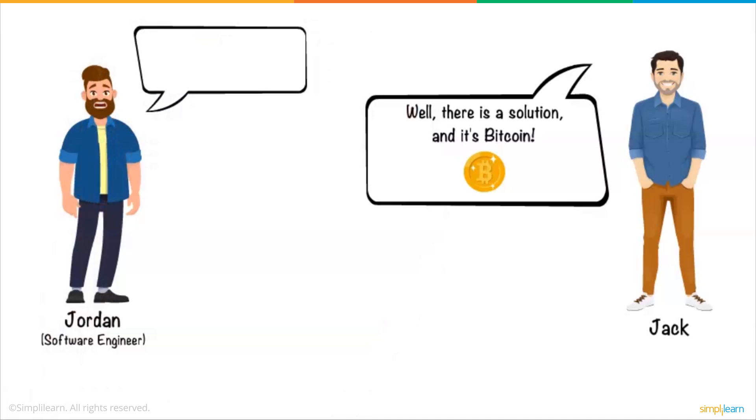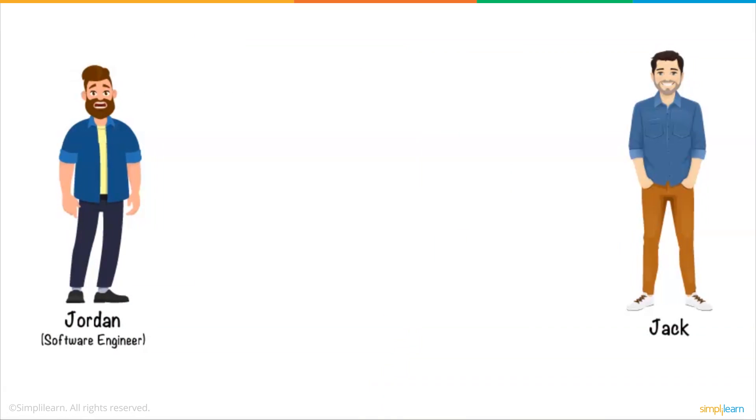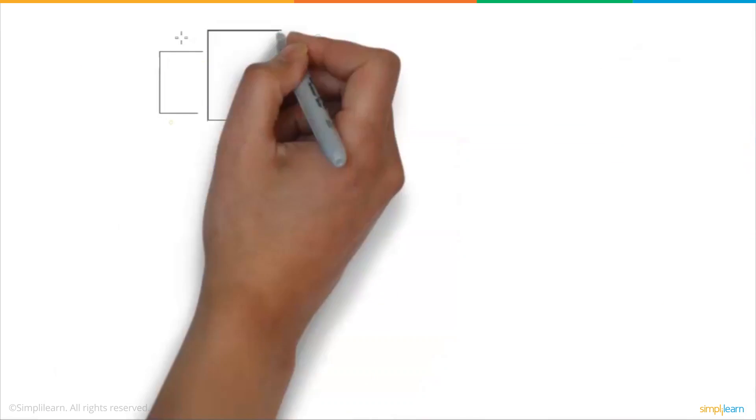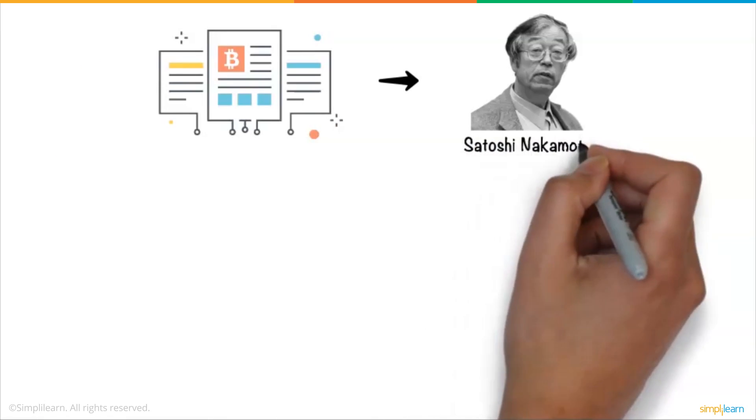Jordan was confused and asked what Bitcoin is. Jack explained that Bitcoin is a cryptocurrency that came into existence in 2008. A white paper was published by a guy named Satoshi Nakamoto.